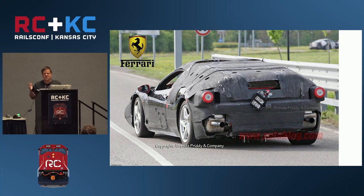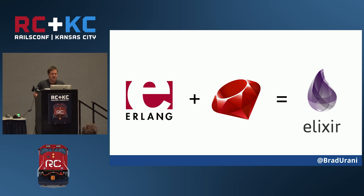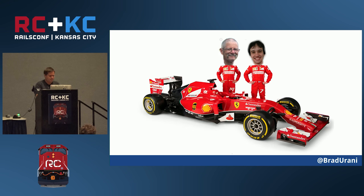Erlang is sort of like this ugly Ferrari — incredibly fast, neat technology with a really difficult, weird syntax that's not very user-friendly. Along came Jose and he created Elixir, which basically runs on Erlang but with a Ruby-esque syntax that's real nice and pretty. The similarity with Ruby is only skin-deep since it's a functional language, but if you're used to Ruby, Elixir will look kind of familiar. So now it's like a pretty Ferrari — fast and beautiful to look at.